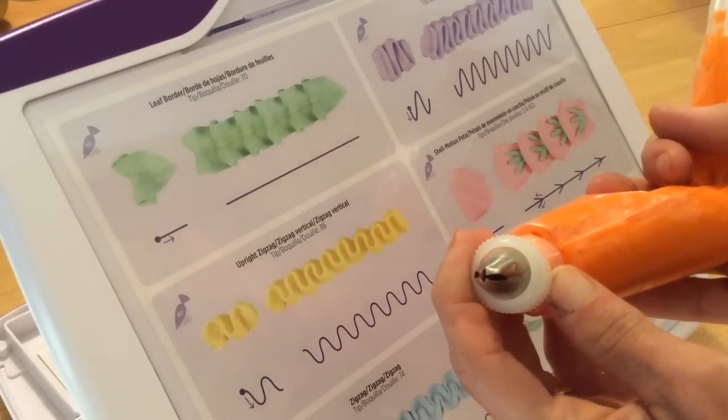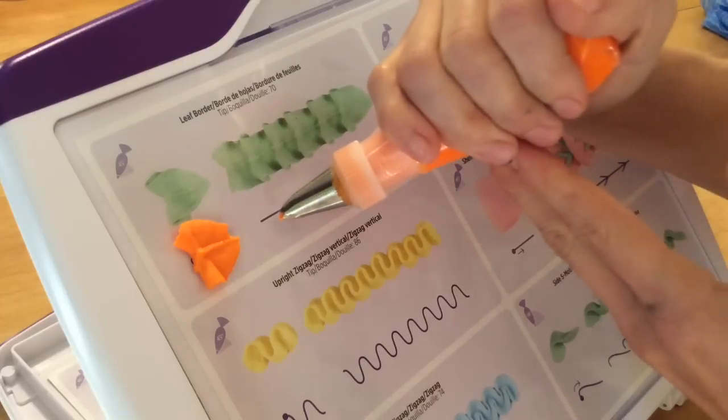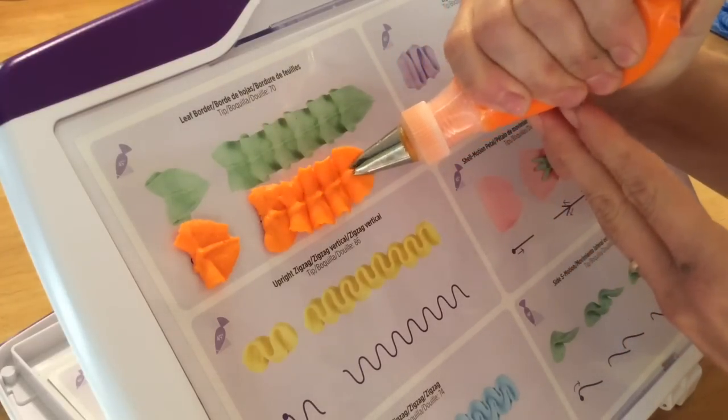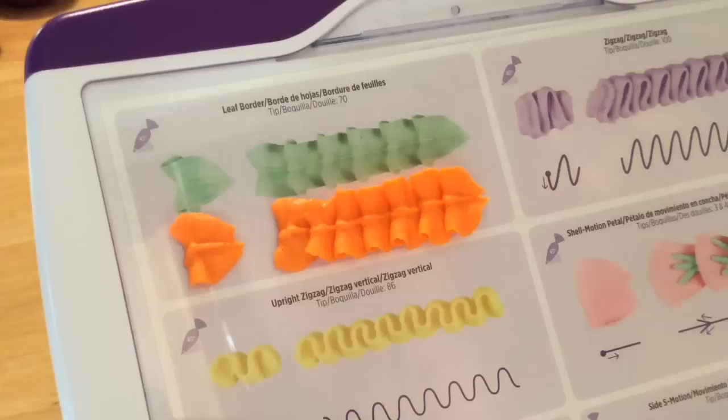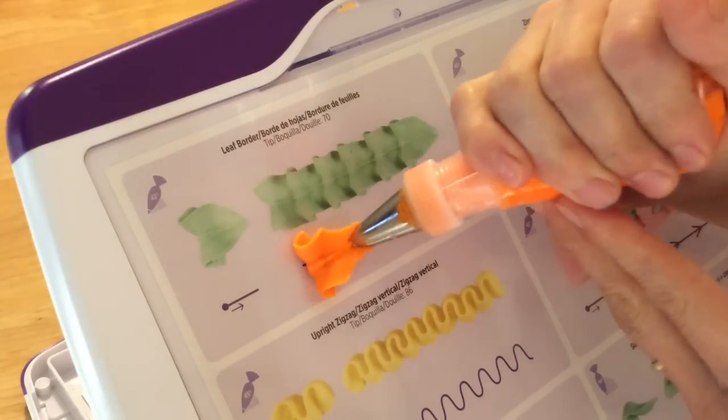This is tip number 70, a large leaf tip. The interesting thing about these leaf tips is you don't just have to make leaves. If you use more of a shell motion, you can make this cool ruffle effect, which is a lot of fun. You don't have to use tip number 70.